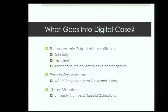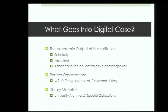A big question is what goes in this. We break it out into three areas: generally the academic output of the institution — scholarly work that should be persistent. We have a collection development policy that determines what gets put in. These are things meant to be maintained permanently, which differs from high performance computing storage. We also have content from partner organizations like the Western Reserve Historical Society, and materials from our own library — digitized content from university archives and special collections.